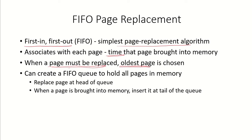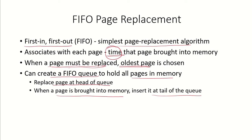What is a victim frame? You can check my video on page replacement algorithms earlier. The oldest page is the one which had been brought in first. Rather than keeping track of the time, we can also create a FIFO queue to hold all the pages in the memory. We will replace the page at the head of the queue because that was brought in first, and when a page is newly brought into the memory, we insert it at the tail of the queue. This is another way of implementing the FIFO page replacement algorithm.